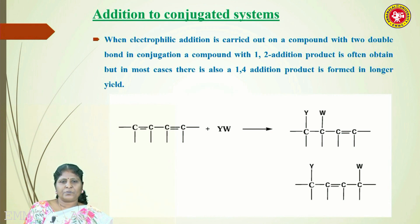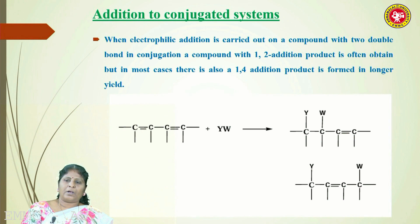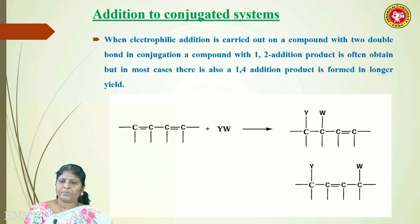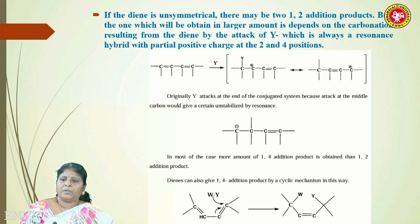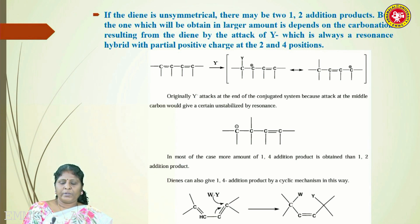Addition to a conjugated system is similar to Michael addition. Y and W can be introduced at adjacent carbon atoms or via resonance at carbons 2 and 4. W⁺ can attack carbon 2 or carbon 4. After attack on carbon 2, a negative charge remains on carbon 4, which is less stable. So the product is always 1,4-addition in case of conjugated systems. Cyclic addition is also possible via a six-membered cyclic transition state, and the final product is again the 1,4-addition product.